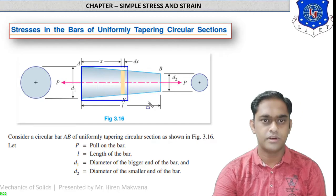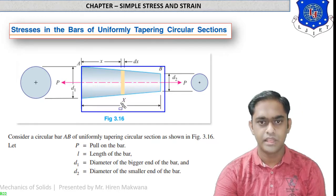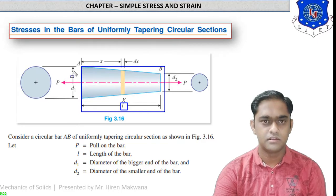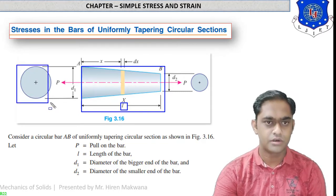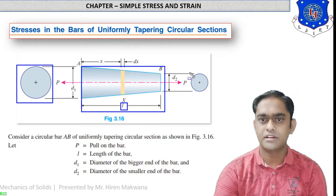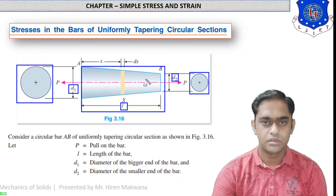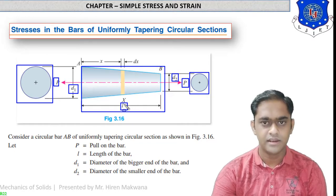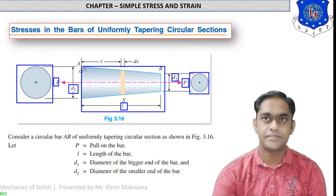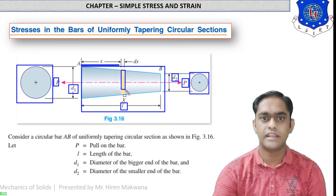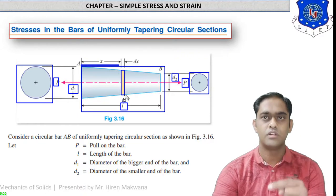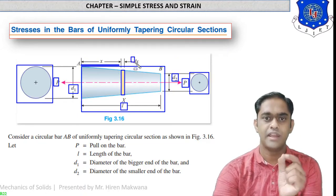This is the tapering rod shown in front view having length L. The diameter at the left corner A is the major diameter D1, and the diameter at the right corner B is the minor diameter D2. The tapering rod is subjected to tensile force P at both ends. From point A, at a distance x, one small circular strip is cut out having thickness dx.